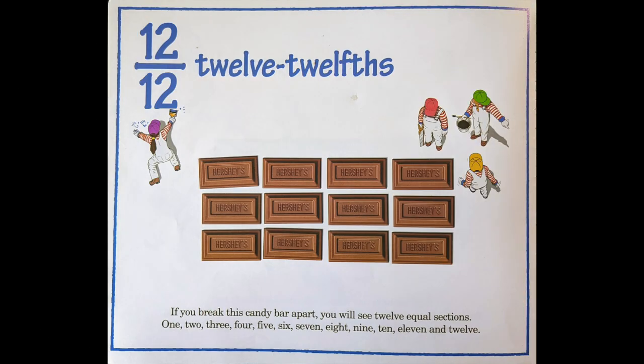Twelve twelfths. If you break this candy bar apart, you will see twelve equal sections: one, two, three, four, five, six, seven, eight, nine, ten, eleven, and twelve.